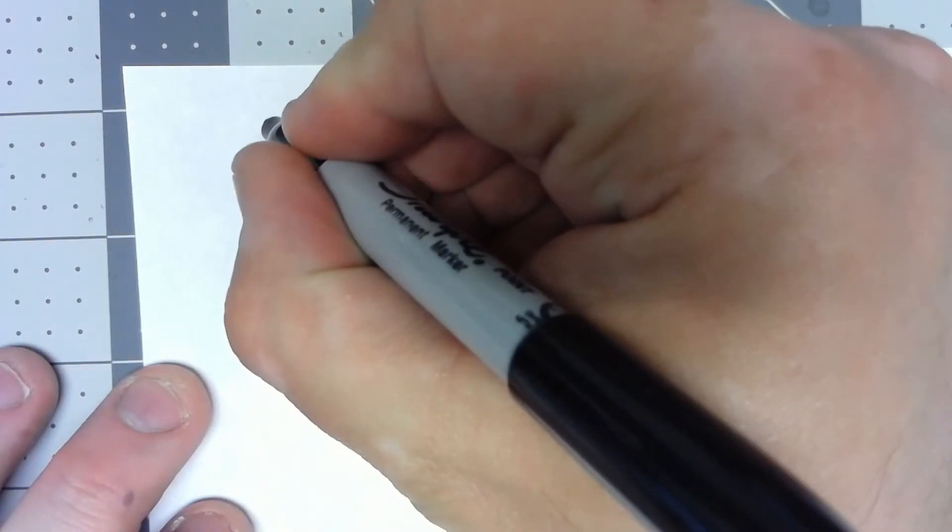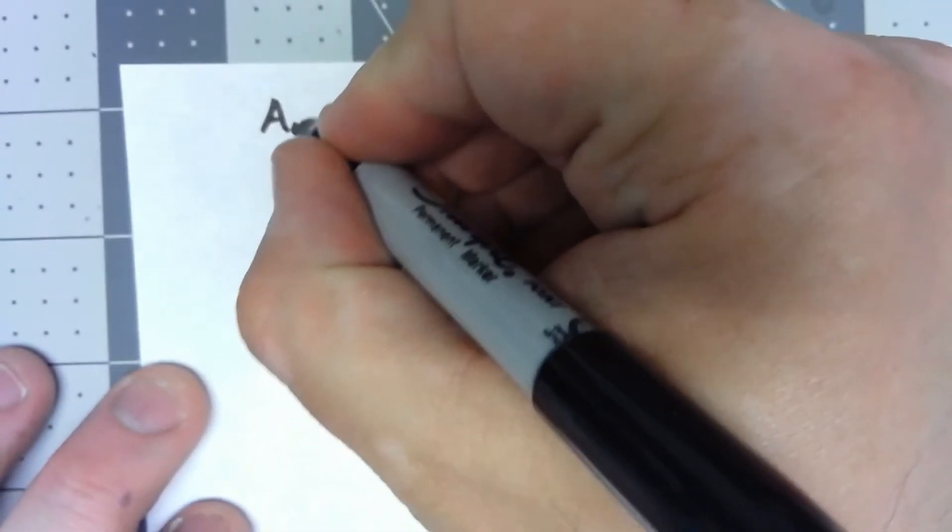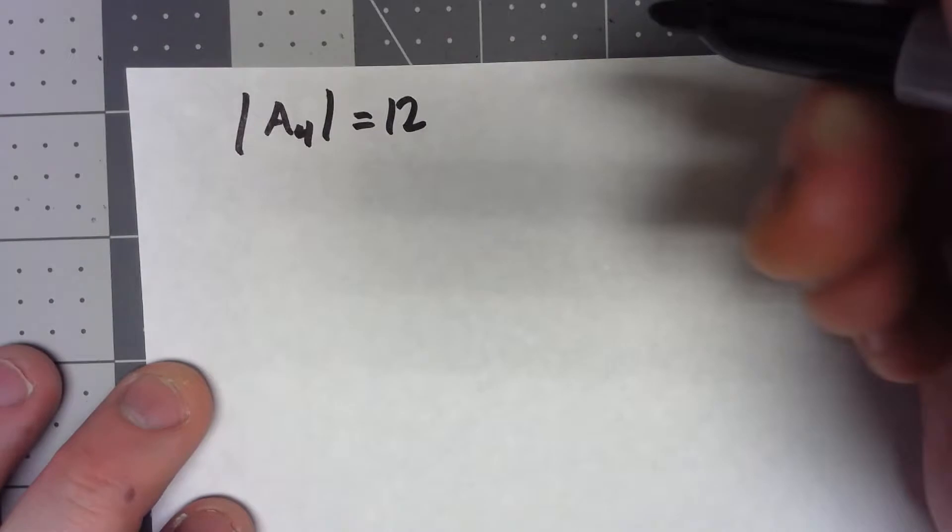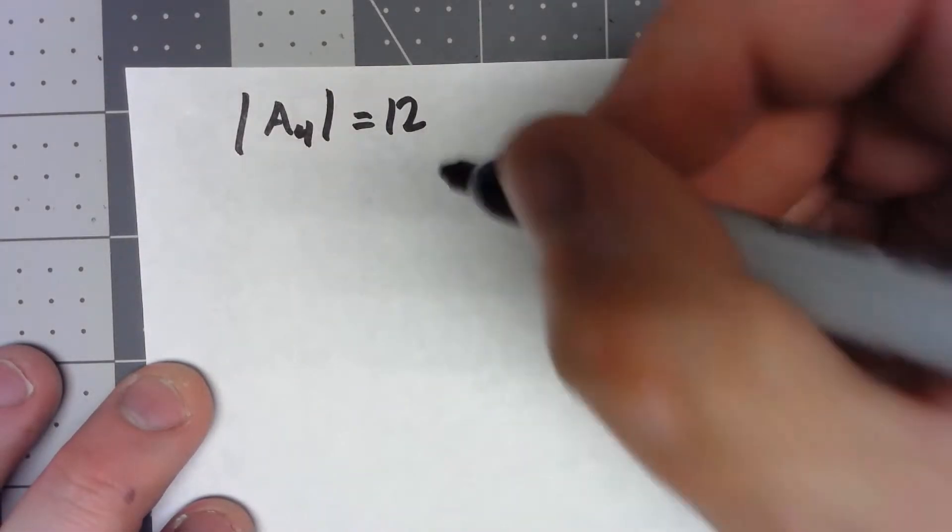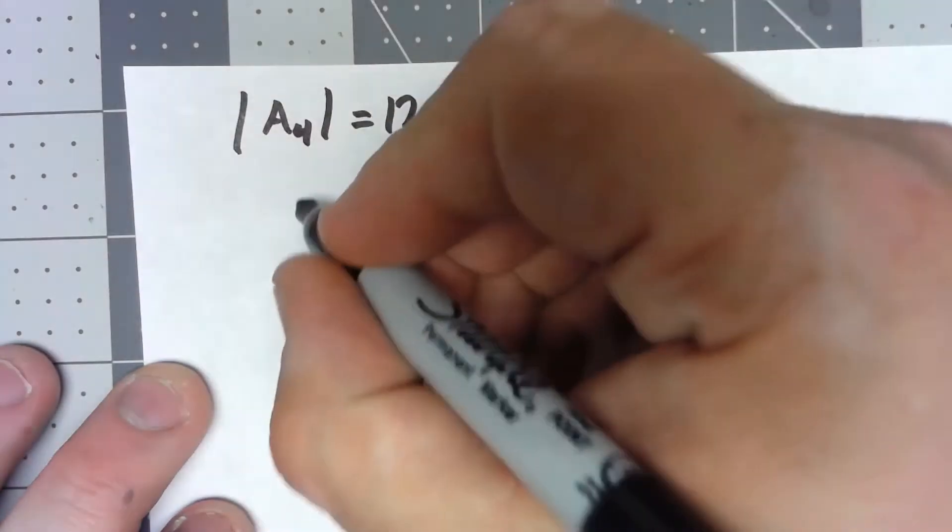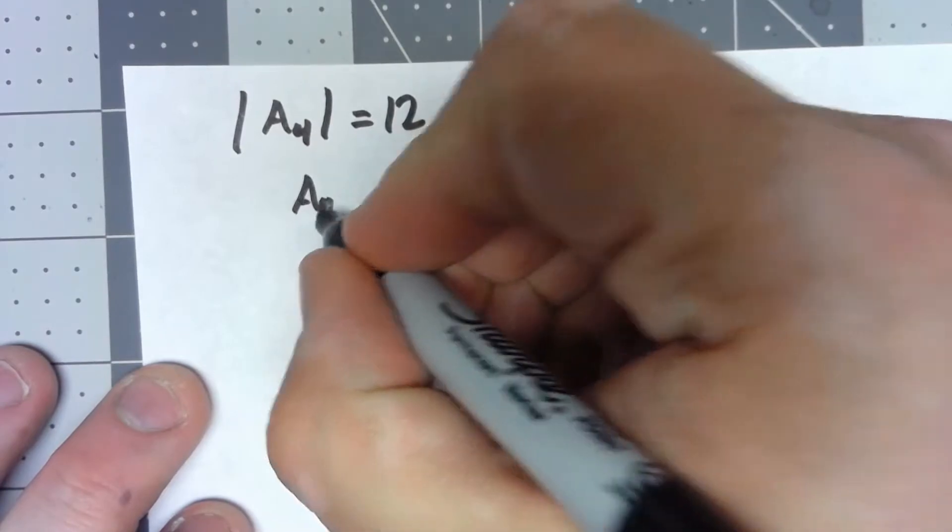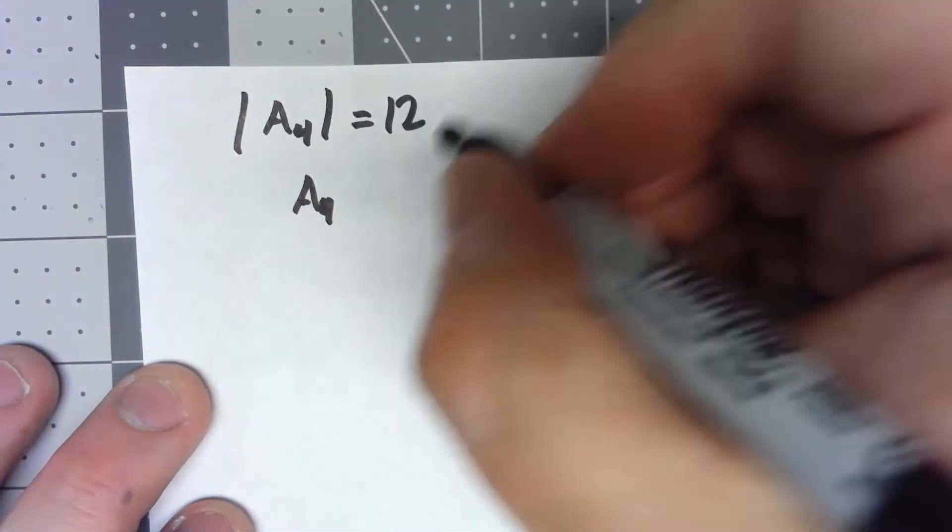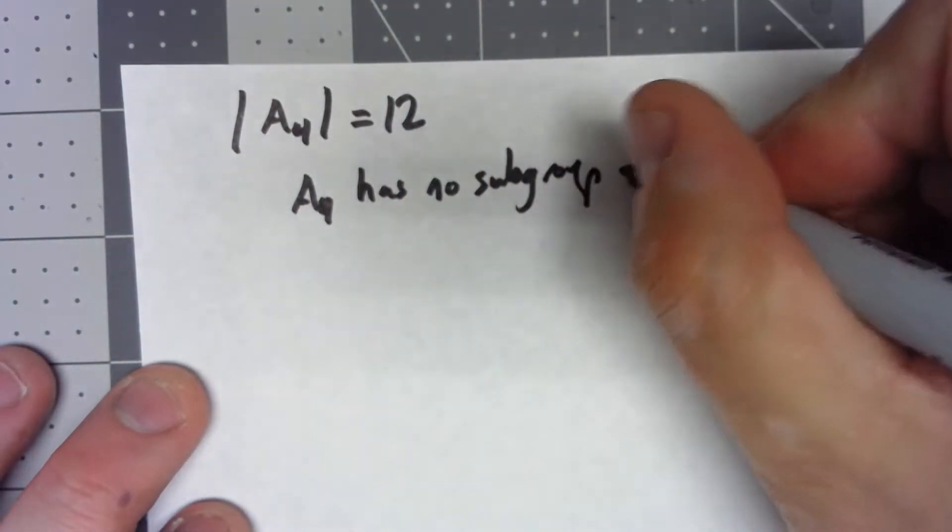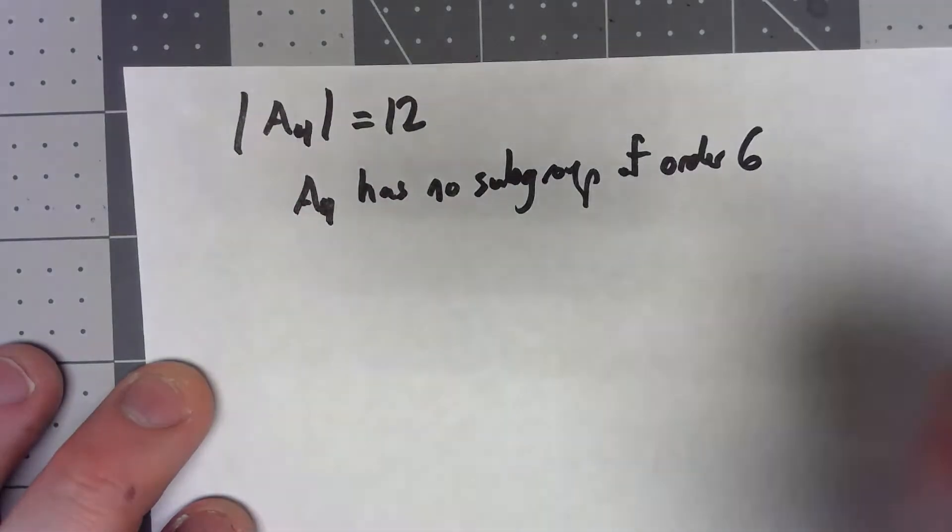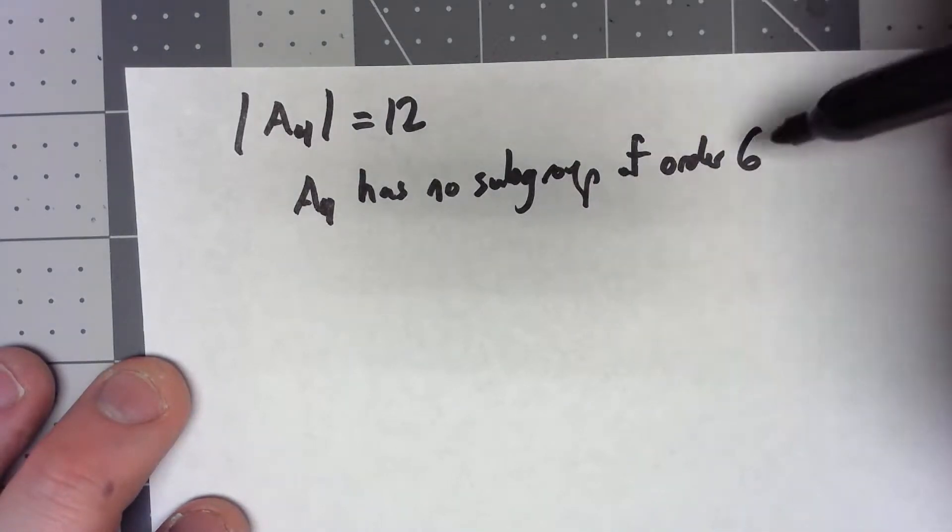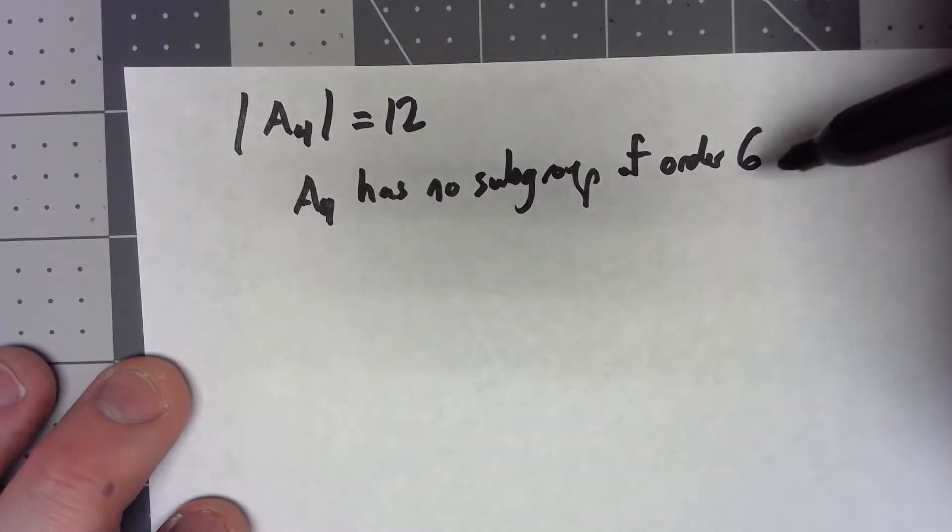For example, we know that the group A4 has order 12. We know that every subgroup of A4 has to have an order that divides 12. However, A4 has no subgroup of order 6. Just because the order divides the order of the group, there's no guarantee it has a subgroup of that order.